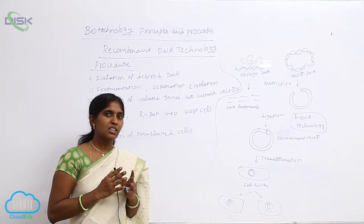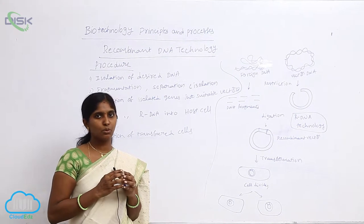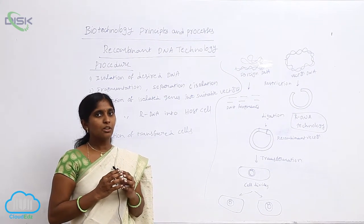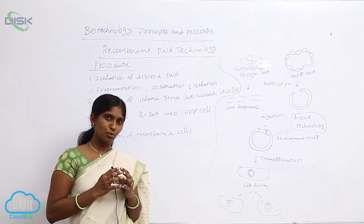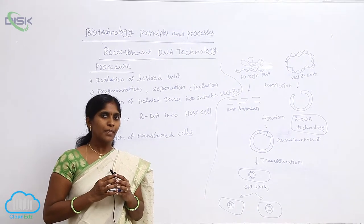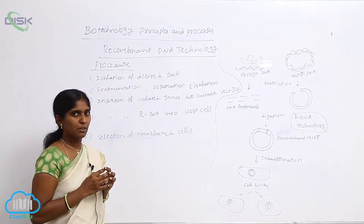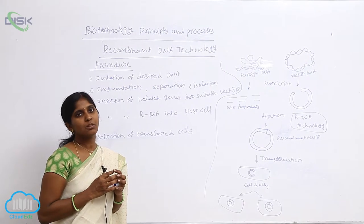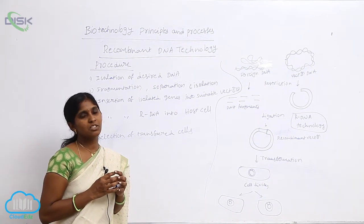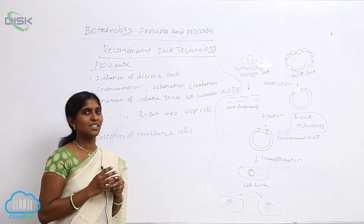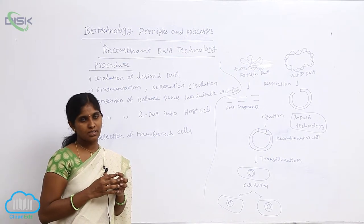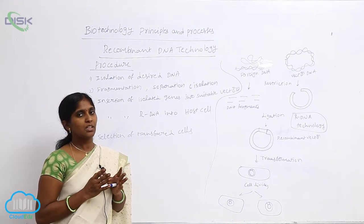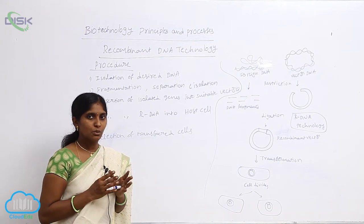DNA is packaged into chromatin material, so getting DNA in its natural mode is very difficult. We therefore go for experimental laboratory techniques. By applying high concentration detergents, the cell is going to lyse — first the cell wall lyses, then the nuclear membrane is cleaved.